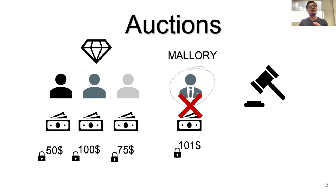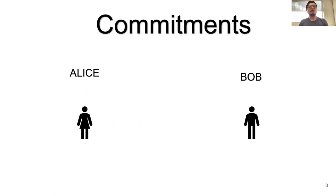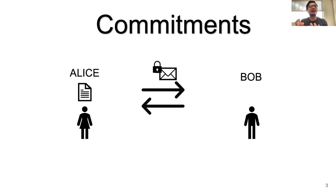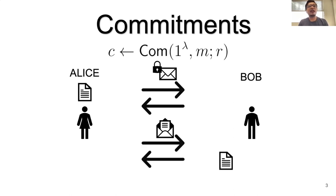For this talk, we focus on a subset called non-malleable commitments. A commitment is a two-party protocol between Alice and Bob, where Alice has a message M she wishes to commit to. This happens in two phases: a commit phase, where Alice sends a sealed envelope to Bob via an interactive protocol — commit takes a security parameter, message, and randomness, and outputs a commit string C — and an opening phase, where Alice opens the message. The open protocol takes C and a decommitment string D and outputs a message or ⊥ indicating an unsuccessful opening.